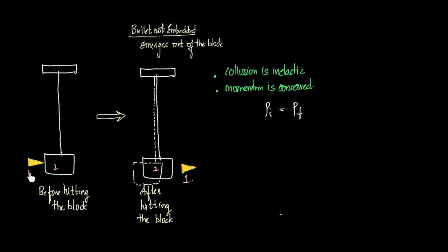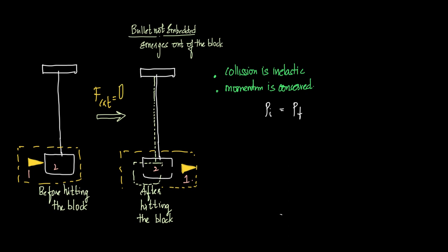In case 2.1, the bullet hits the block, the block begins to displace, and the bullet emerges out of the block, leaving a hole. The collision is inelastic and momentum is conserved. Considering bullet and block as the system with no external forces, we write: M1·U1 + M2·U2 = M1·V1 + M2·V2 — this time with individual final velocity components, not a combined velocity.